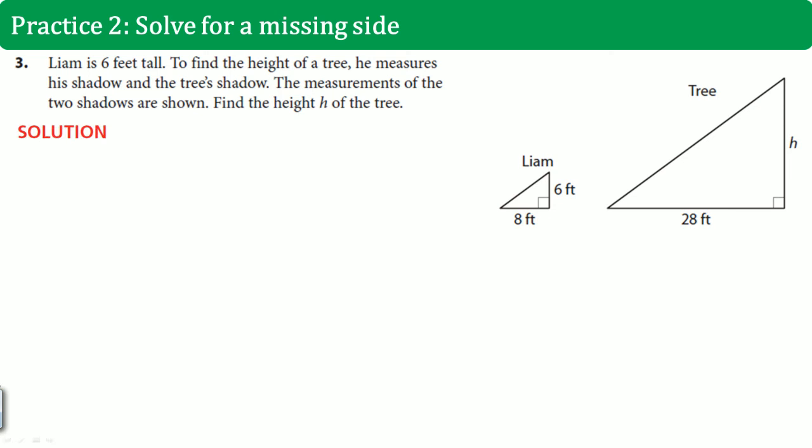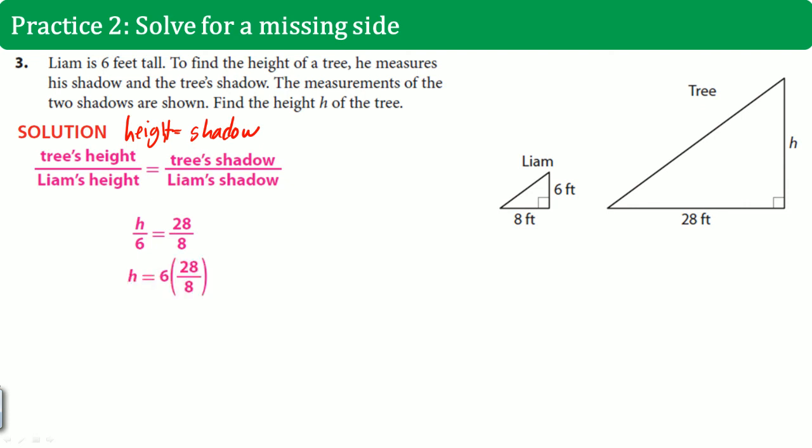So we set up the proportion. I went here tree height divided by Liam's height equals to tree shadow over Liam's shadow. So I did height equals to shadow for the ratio. Again, you could do tree to Liam. It doesn't matter. This is what I have after I plug it in. So the tree's height is h divided by Liam's height, which is 6, equals to tree's shadow, which is 28, and Liam's shadow, which is 8. Cross multiply, then divide 6 to both sides. You get h equals to 21. So you can say that the tree here is 21 feet tall.